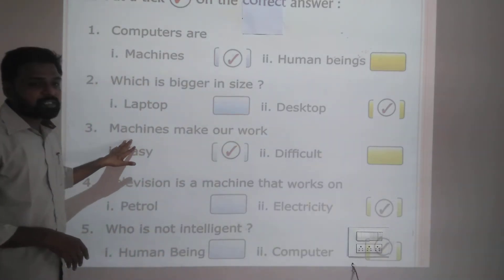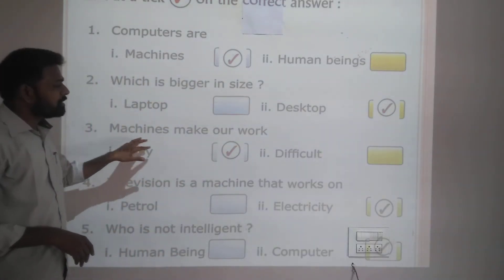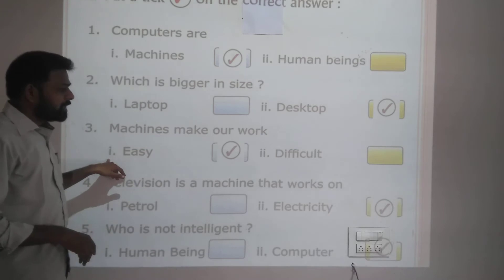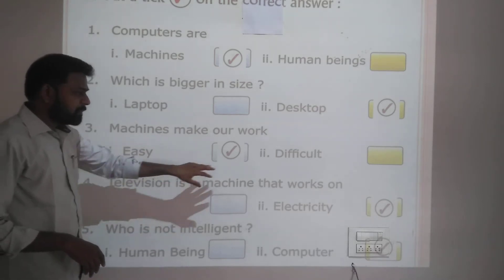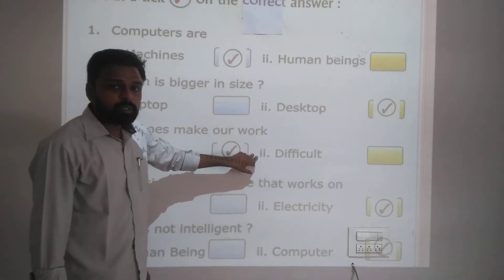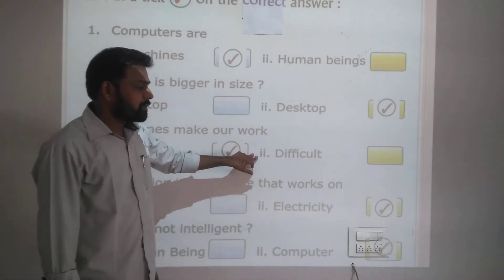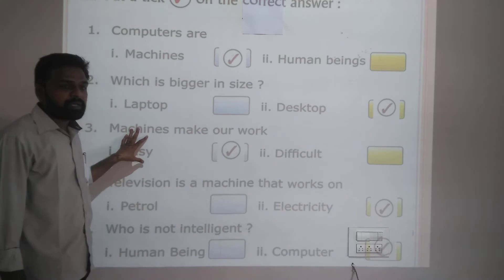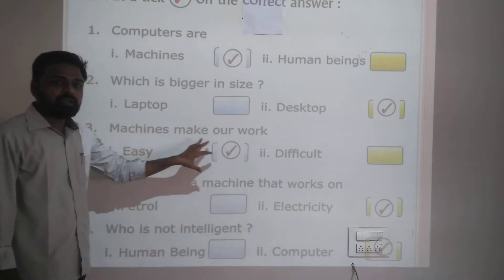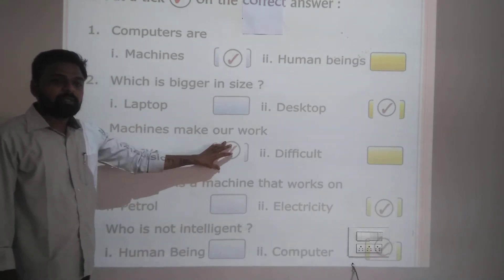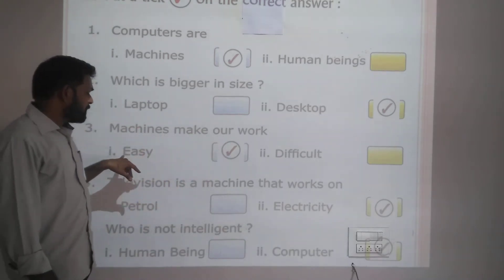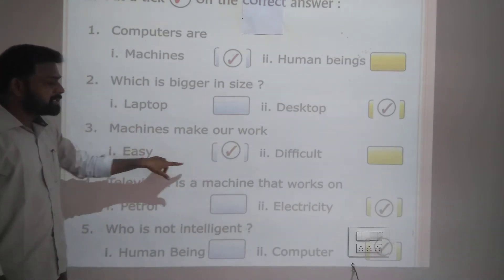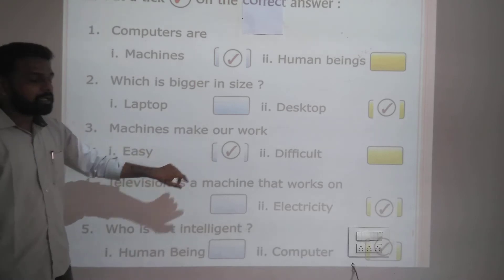Third option: machines make our work — one: easy, or two: difficult? Machines make our work easy, not difficult. Yes, it makes our work easy. So tick easy.